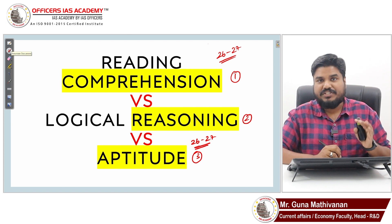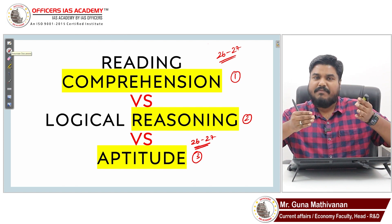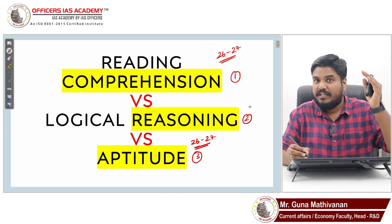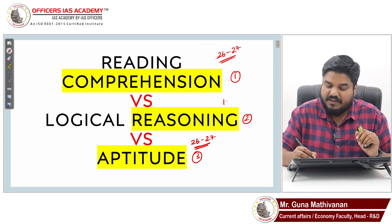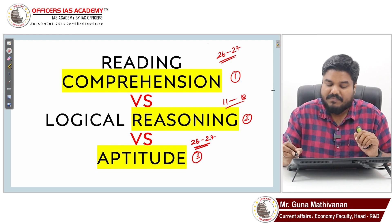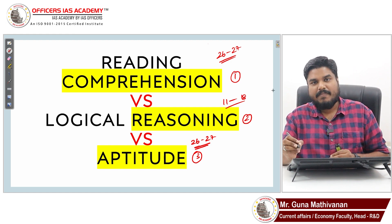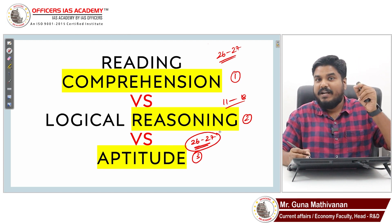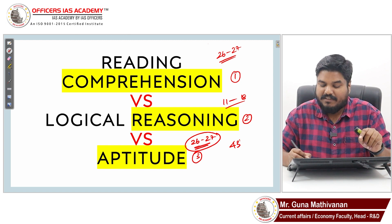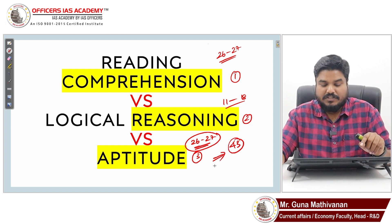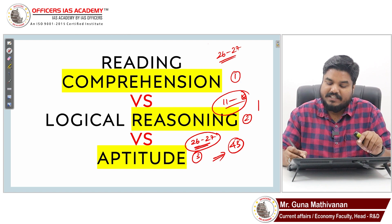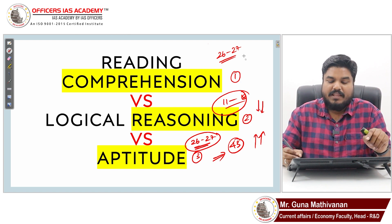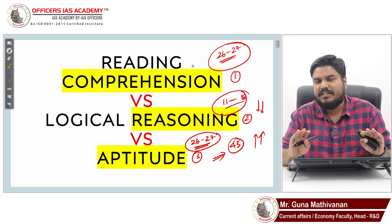Post-2018, reading comprehension hasn't changed much — still around 26 to 30 questions. However, logical reasoning has reduced to between 11 and 18 questions. The weightage for aptitude has significantly increased; in 2023 almost 43 questions came from aptitude. So logical reasoning is coming down, aptitude is increasing, and comprehension remains fairly constant.